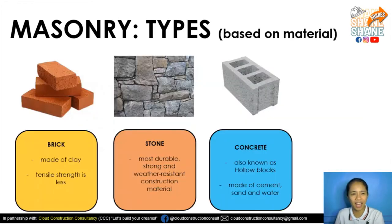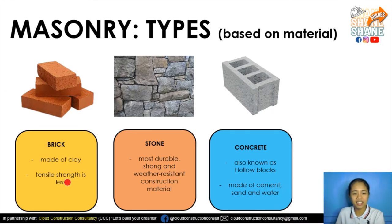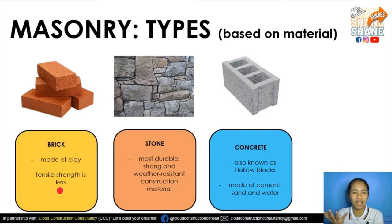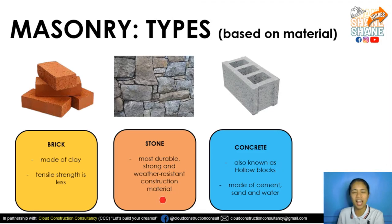What are the types of masonry? We have three common ones. First, brick, which is made of clay. Its tensile strength is less, making it part of non-bearing types of masonry. Non-bearing means it cannot carry load, while bearing can carry load. For stone, it is the most durable, strong, and weather-resistant construction material.